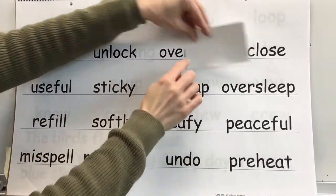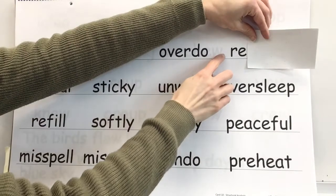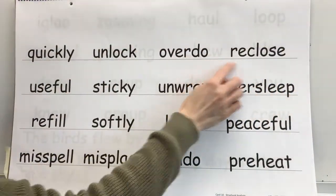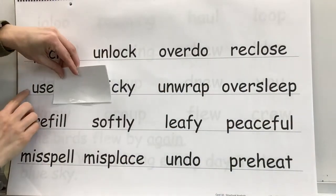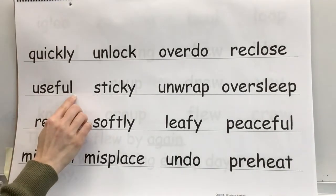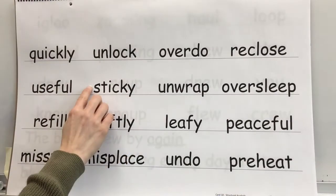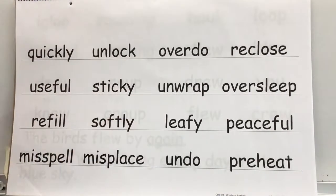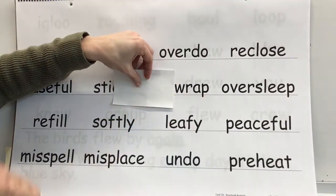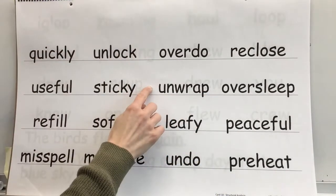Affix: over. Base word: do. Whole word: overdue. Affix: re. Base word: close. Whole word: reclose. Base word: use. Affix: ful. Whole word: useful. Base word: stick. Affix: y. Whole word: sticky. Affix: un. Base word: wrap. Whole word: unwrap.